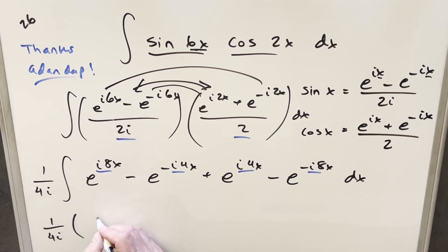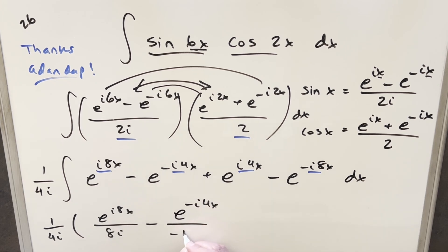For this first term, we're going to have e^(i8x). We need to bring out 8i in the denominator. Here we'll have minus e^(-i4x). Bring a minus 4i in the denominator here.